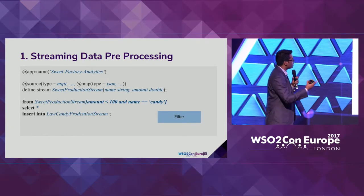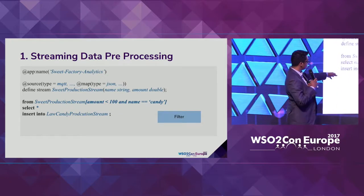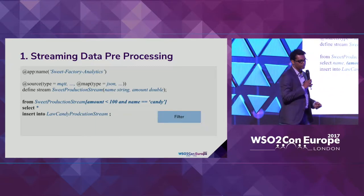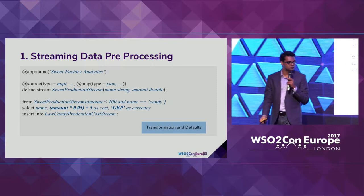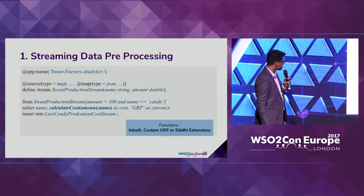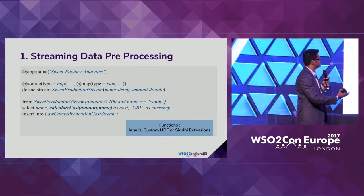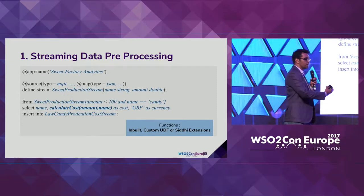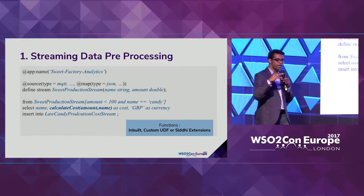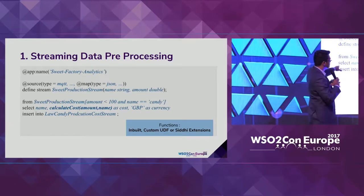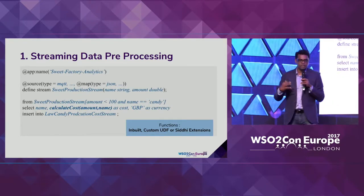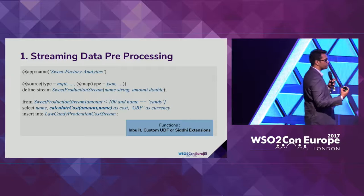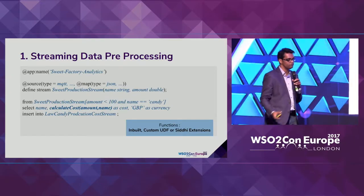If we want to calculate cost, we can apply a mathematical calculation to the amount. We can add default values such as currency in pounds. We can also call built-in functions, custom UDFs, or Siddhi extensions within this flow. This forms a pipeline: consume data, do some processing, and send it out — making the data from sensors or other applications more meaningful for your app.